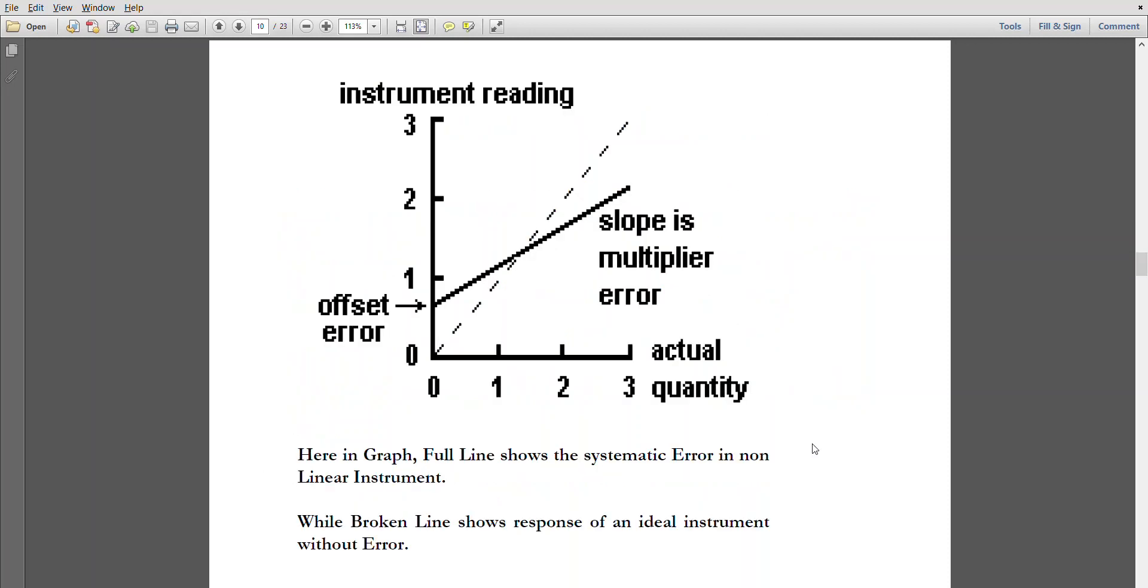If you see this graph, whenever you see a graph please keep in mind you should know what is x-axis and y-axis. Unfortunately this example does not tell what is x-axis and y-axis. The x-axis is the unit of measurement, while the y-axis is the output. So the ideal actual measurement that we want is the dotted line.